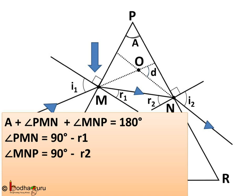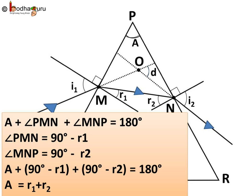Now there is a normal on point M, so this angle is 90 degrees. So angle PMN plus angle R1 will be equal to 90 degrees. Thus angle MNP plus R2 will be equal to 90 degrees. Thus we can say angle PMN is equal to 90 minus R1 and angle MNP is equal to 90 minus R2. By putting the values of angle PMN and angle MNP, we get angle A plus 90 minus R1 plus 90 minus R2 is equal to 180 degrees.